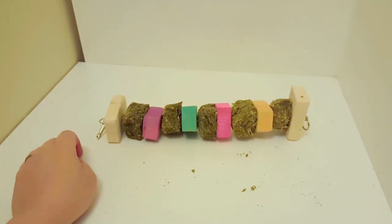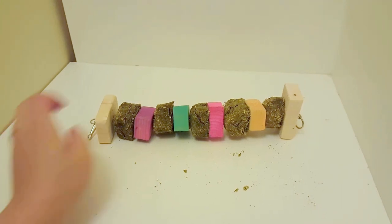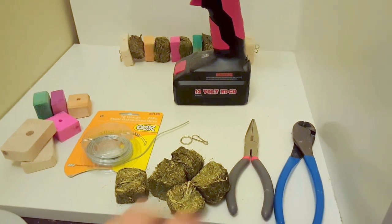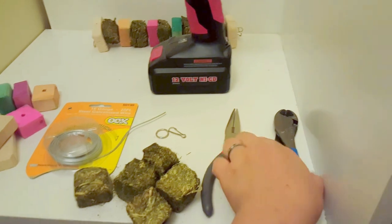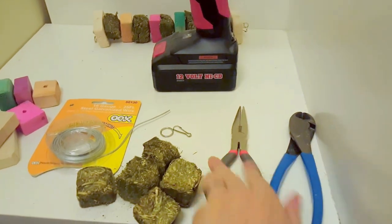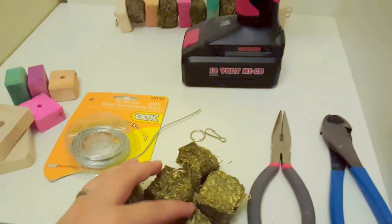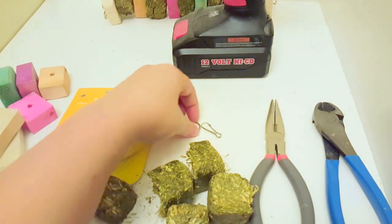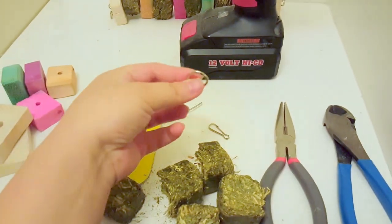So to get started I'll show you guys all the supplies first that we're going to need for today. Alrighty so let's look at everything we need. First we have our wire cutters, our needle nose pliers, five hay cubes, a circle end ring. I'm actually not really sure what this is called.